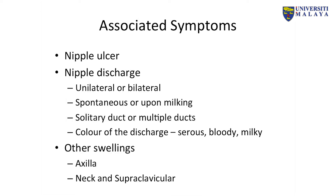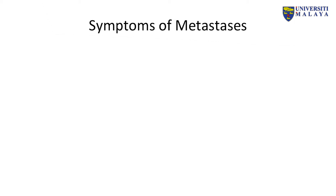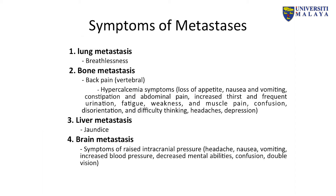Other than the lump over the breast, is there any other swellings — for example in the axilla, the neck, and the supraclavicular fossa? It's important to ask about symptoms of metastasis. The commonest sites for breast cancer to metastasize are the lung, bone, liver, and brain. Lung metastasis presents with breathlessness; bone metastasis with back pain and hypercalcemia; liver metastasis with jaundice or epigastric mass; and brain metastasis with symptoms suggestive of raised intracranial pressure.